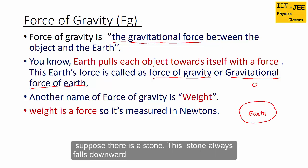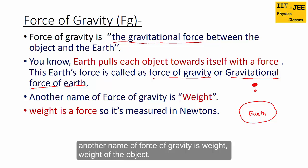Suppose there is a stone. This stone always falls downward because earth pulls this stone towards itself or downward. That's why force of gravity always acts downward. Another name of force of gravity is weight, weight of the object.